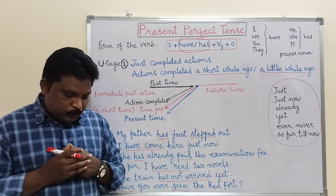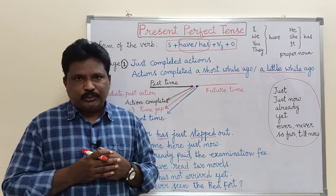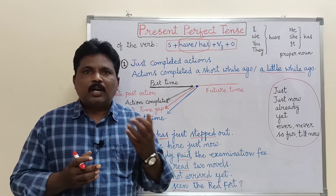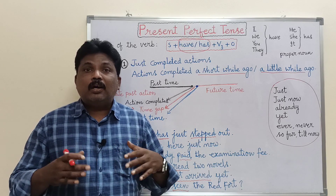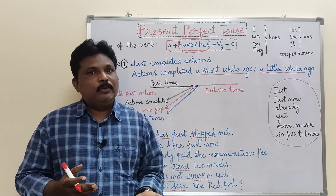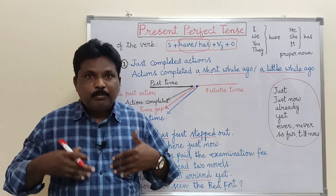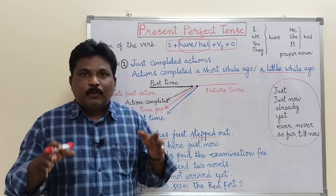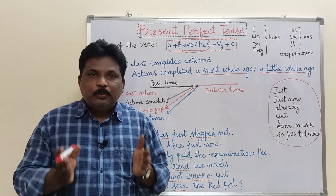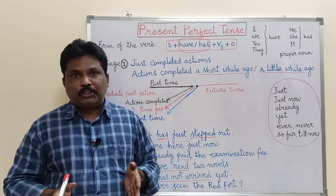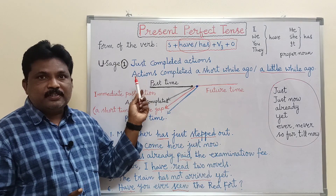For example, if we have attended a function and someone asks 'when did you come here?', the answer varies. Some give the answer in simple past — 'I came here last night.' Some in present continuous — 'I am coming now.' And some in present perfect: 'I have just come here' or 'We have just come here.' To express the immediate past action — actions completed a short while ago or a little while ago — present perfect tense is used.